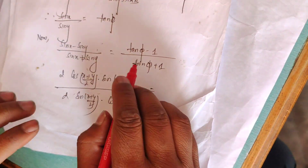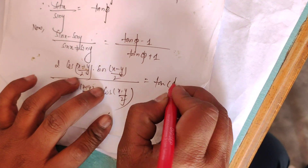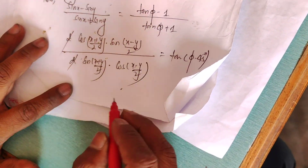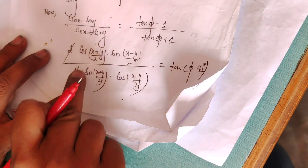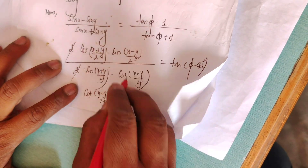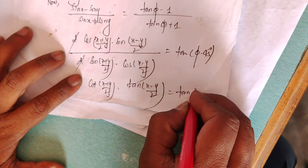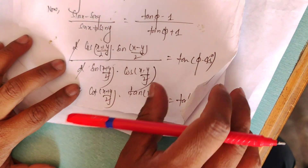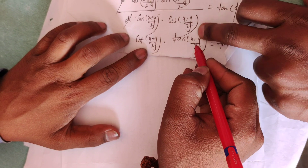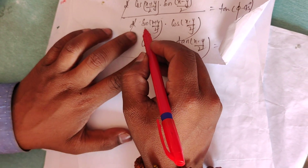This gives tan(phi minus 45). cos(x+y)/2 times sin(x-y)/2. Now sin x minus sin y by 2 and sin x plus y divided by 2. That's the formula. What is cos divided by sin? Cos by sin is cot.